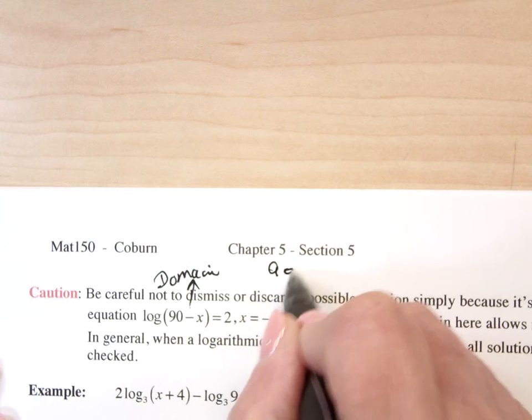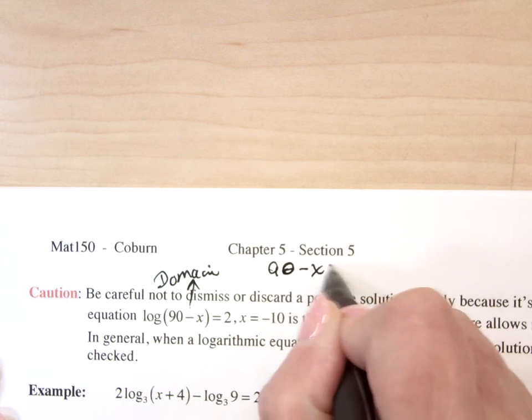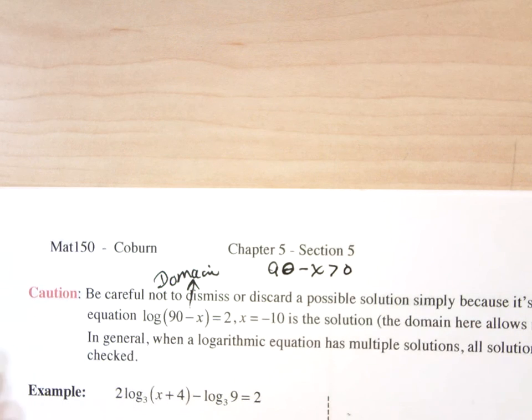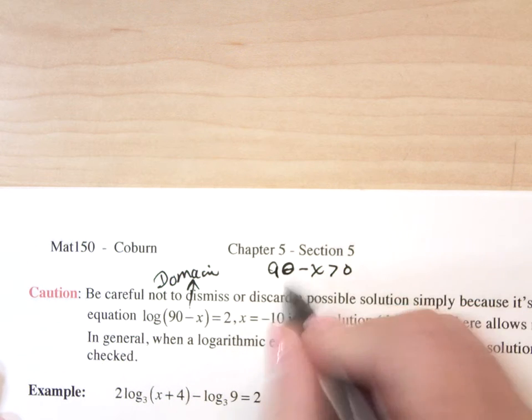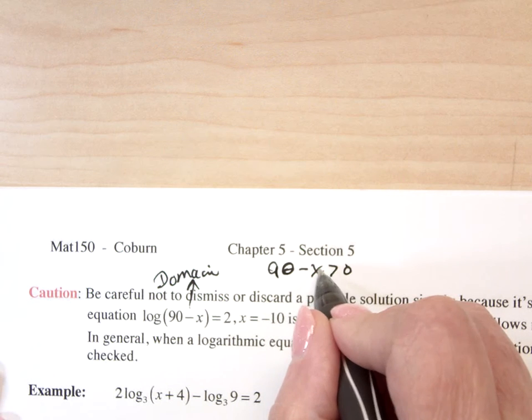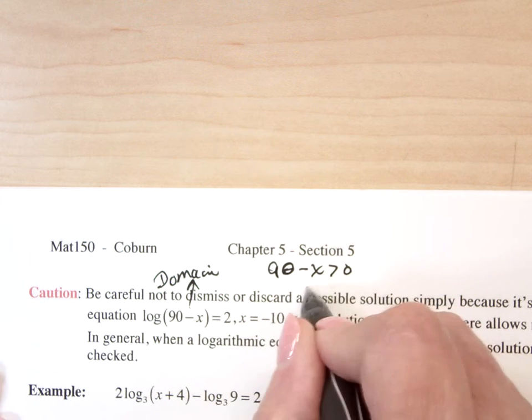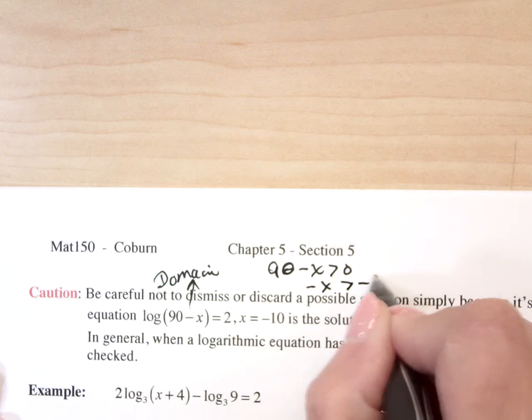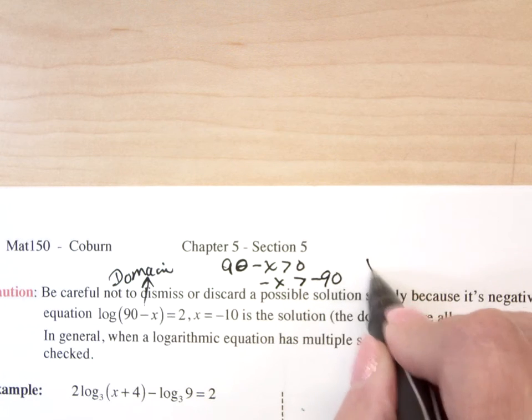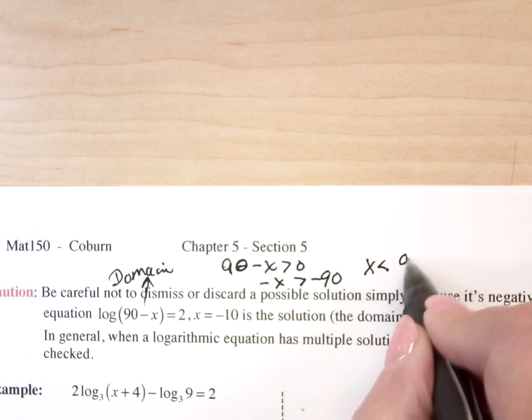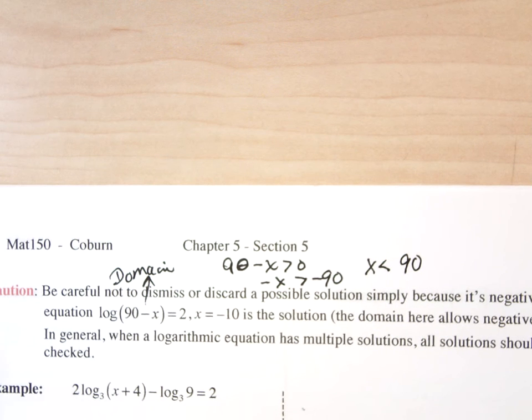90 minus x has to be positive. Or, what you have is that minus x must be greater than minus 90, or x is less than 90. So it picks up the negative numbers. As long as x is less than 90, negative numbers could be an answer. It's the domain, the domain determines it.